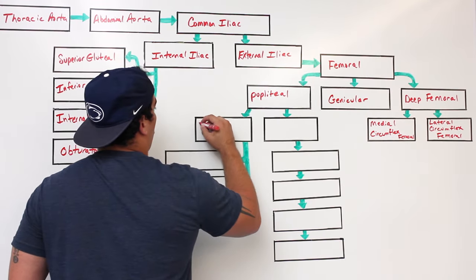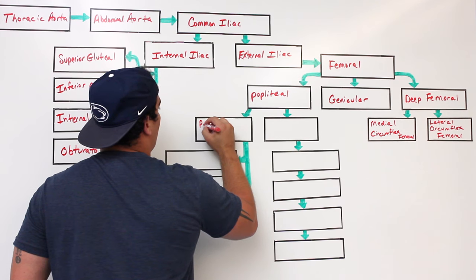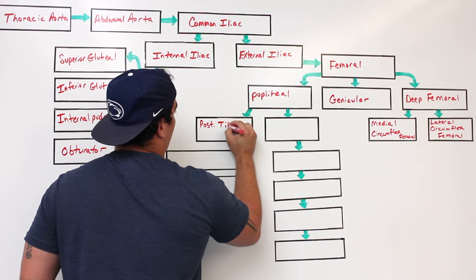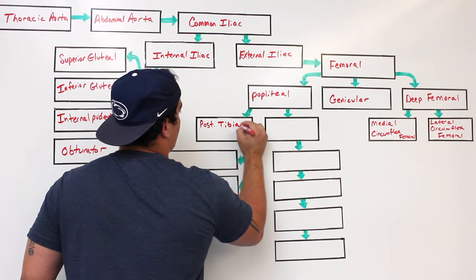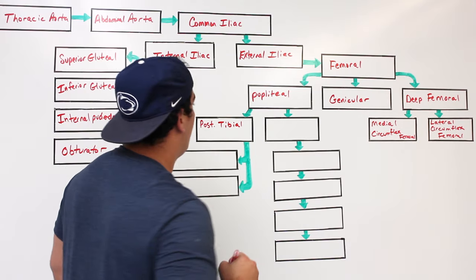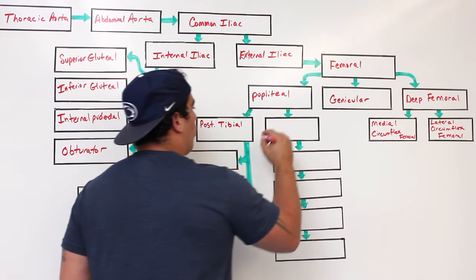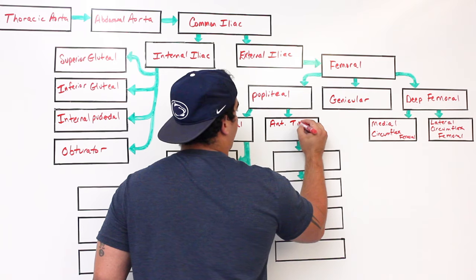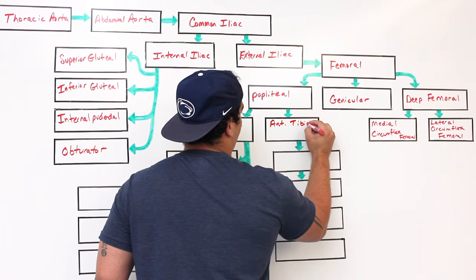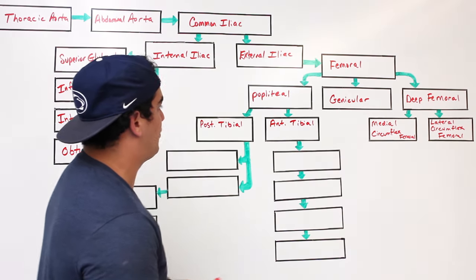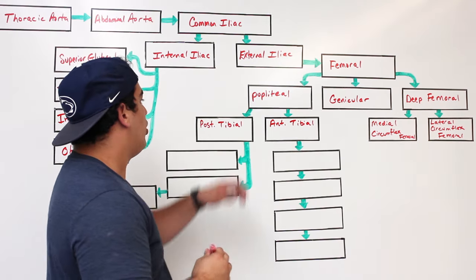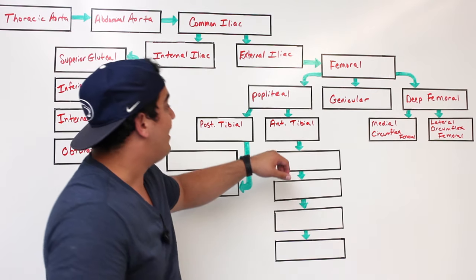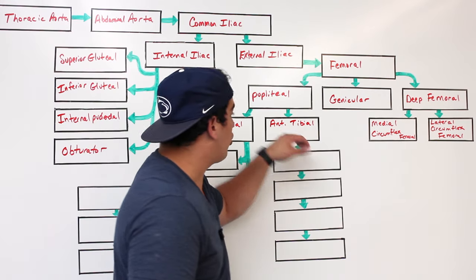The popliteal artery gives off two branches: one is called the posterior tibial artery, and the other is called the anterior tibial artery.